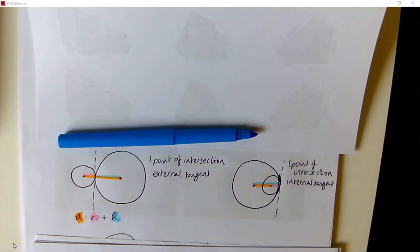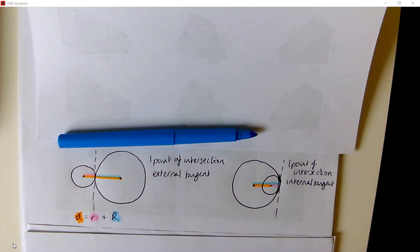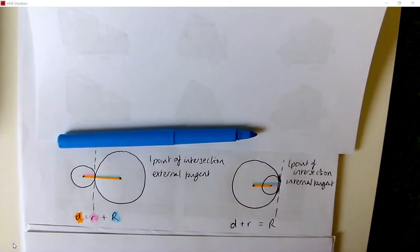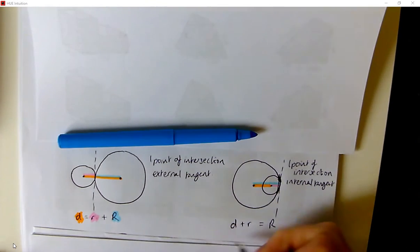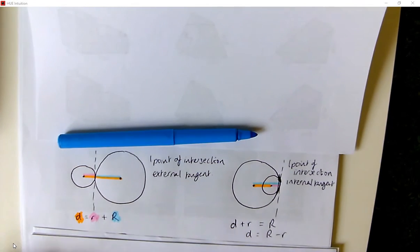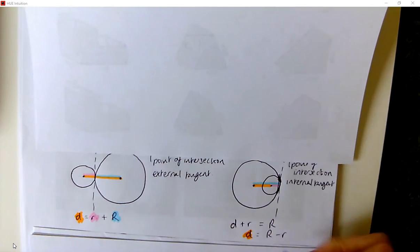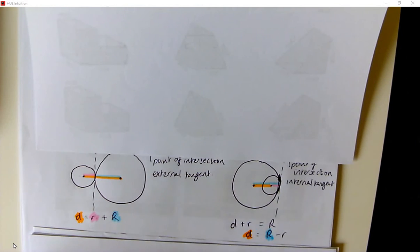If instead we have the little circle inside the big circle, then the distance between the centres plus the little radius will give us the big radius. I can rearrange that to make d the subject: d equals the big radius minus the little radius. That's another useful measure to help us figure out what's going on in different situations.